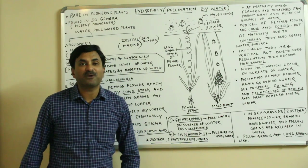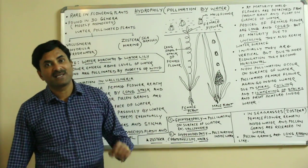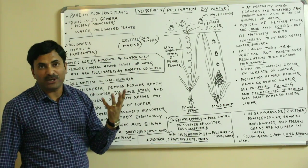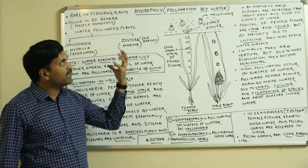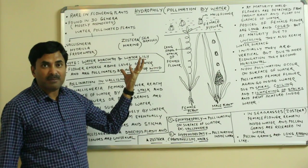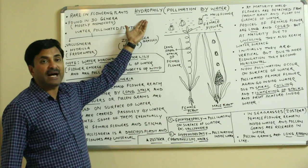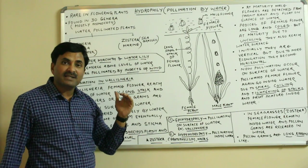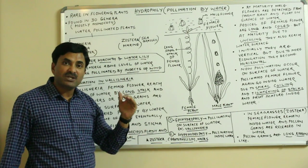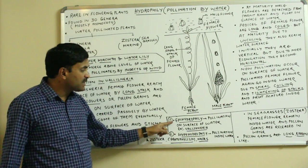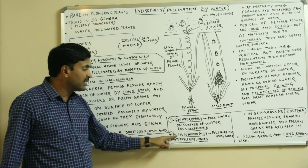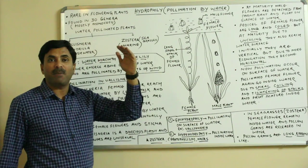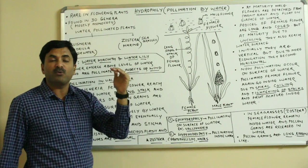Hello, today we are going to discuss hydrophily, which is a mode of pollination when pollination occurs by water. Hydrophily is categorized into two types: epi-hydrophily and hypo-hydrophily. Epi means above and hypo means below.